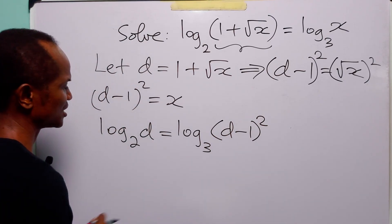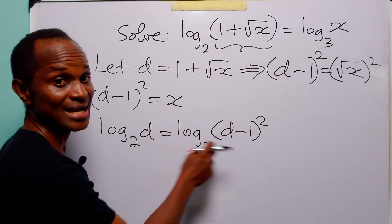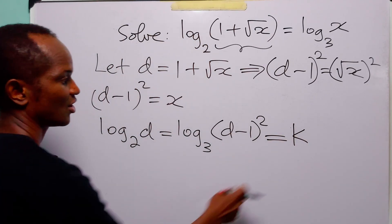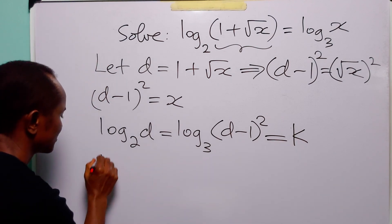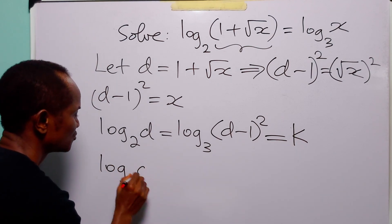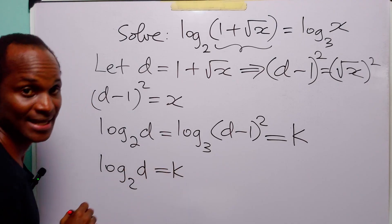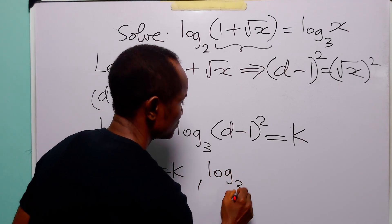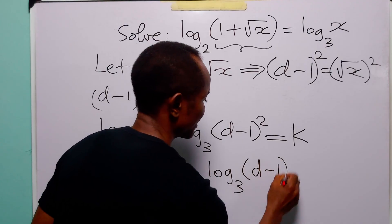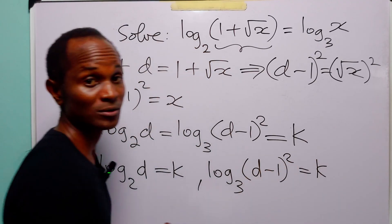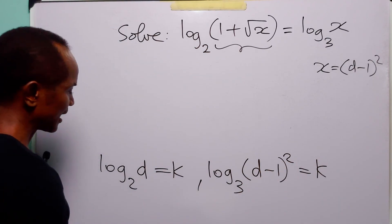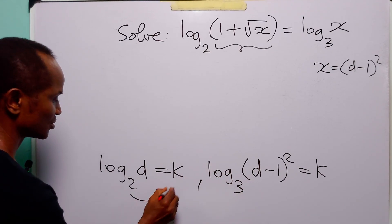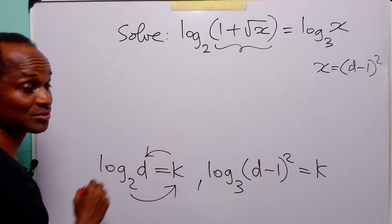The next thing we are going to do is to equate both sides of the equation to a constant k. From this we have that log to base two of d is equal to k, and log to base three of (d minus one) squared is also equal to k. You know that when we have statements like this, it simply means that two to the power k is equal to d.